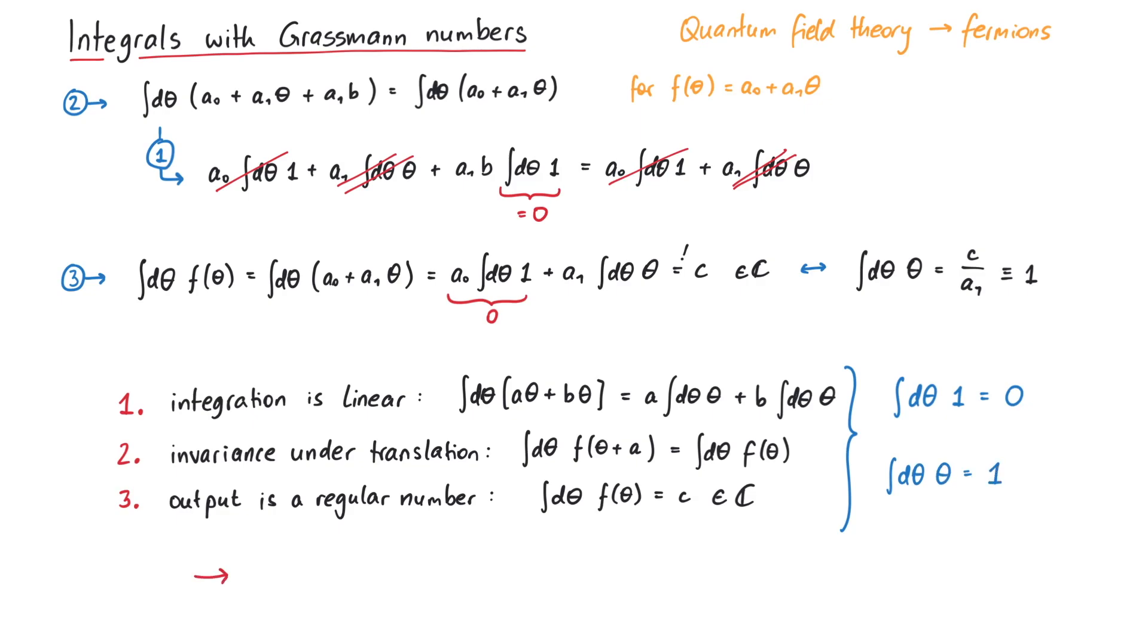In conclusion, the integration over Grassmann numbers works exactly the same as taking a derivative. This has lots of interesting applications in quantum field theory when we consider fermions. But that's pretty much it for this video. Thanks for watching.